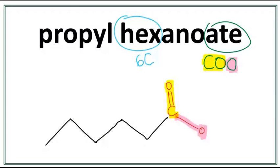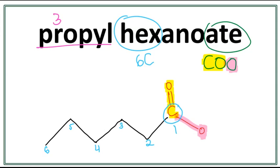Let's number these carbons. The first carbon is always the carbon in the functional group right here. Then second carbon, third carbon, fourth carbon, fifth carbon, and the sixth carbon right here. Now let's work on the side chain, which is propyl — three carbons in the side chain. The side chain always attaches with the oxygen in the COO group right here.